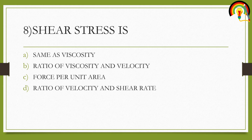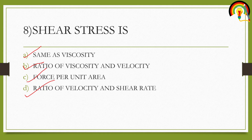Question eight: shear stress is — options are: A) the same as viscosity, B) the ratio of viscosity and velocity, C) force per unit area, or D) the ratio of velocity and shear stress. Shear stress is not the same as viscosity, and not the ratio of viscosity and velocity. Shear stress is force per unit area — so the answer is C.